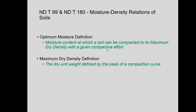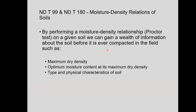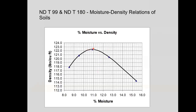The optimum moisture is defined as the moisture content at which a soil can be compacted to its maximum dry density with a given compactive effort. The maximum dry density is the dry unit weight defined by the peak of the compaction curve. The peak is what they call the maximum dry density, and at that particular point is your optimum moisture. These are things we're going to be using out in the field.